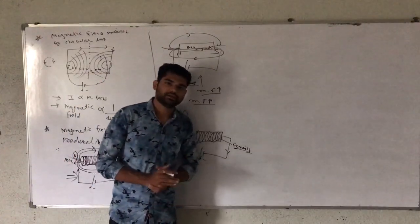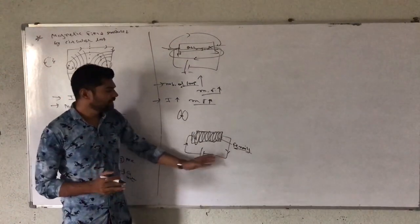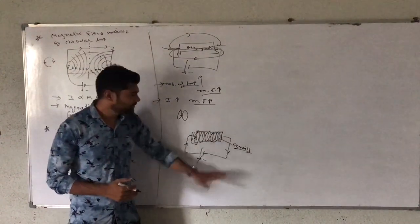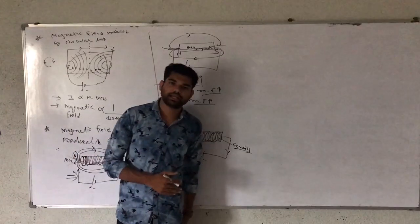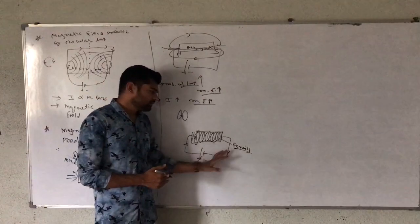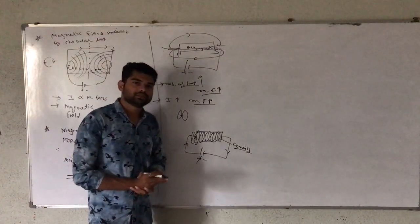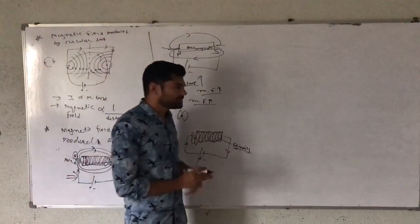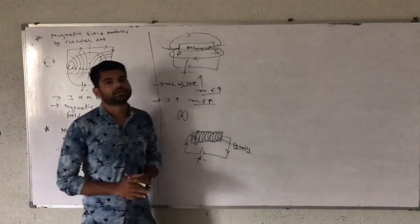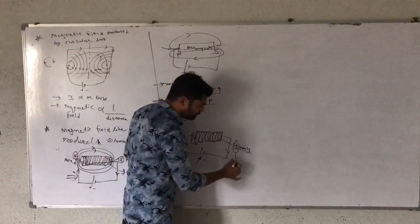Iron nails act as a magnet when electric current passes, attracting objects towards it. When the current is switched off, the magnetic characteristics return to normal.